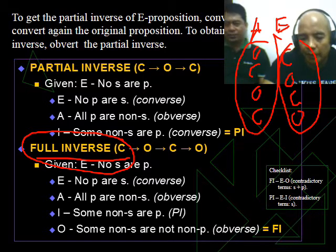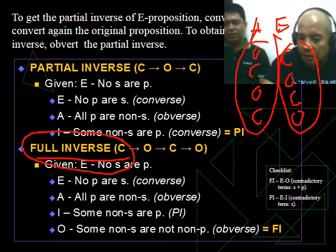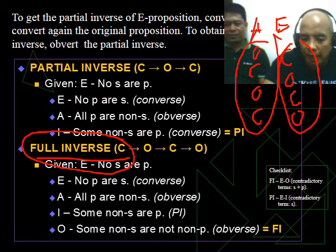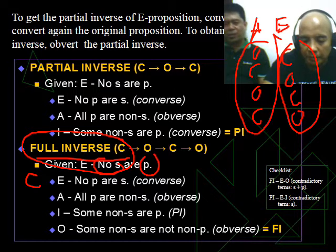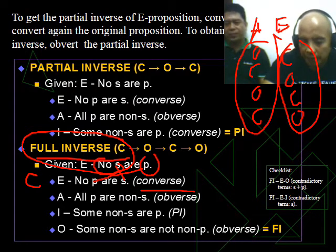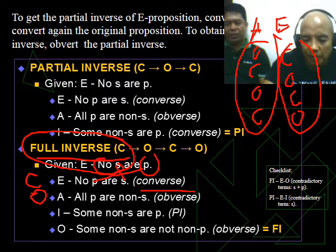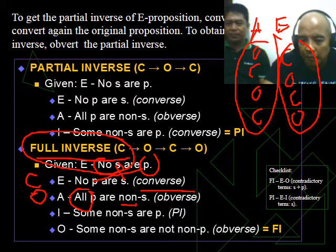So an E proposition, no S are P. What do we use first? COCO. Convert it first, so change the predicate to become the subject and the subject becomes the predicate by virtue of simple conversion. Next, after you derive, you get the obverse. From no P are S it becomes all P are non-S. You change the quality then contradict the predicate. Then from all P are non-S it becomes some non-S are P by virtue of partial conversion.